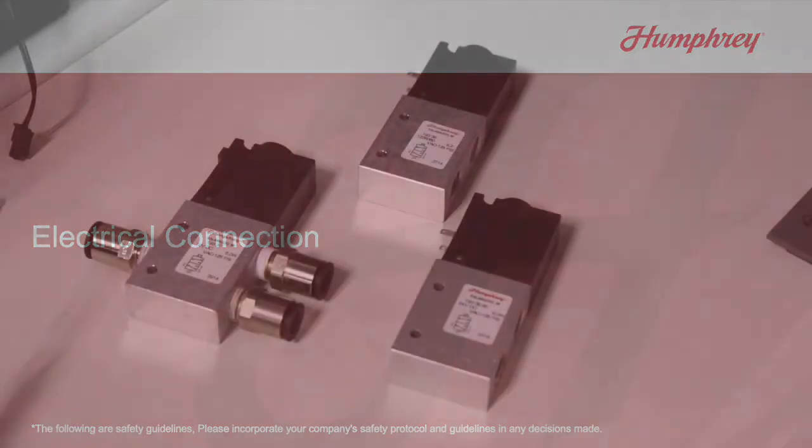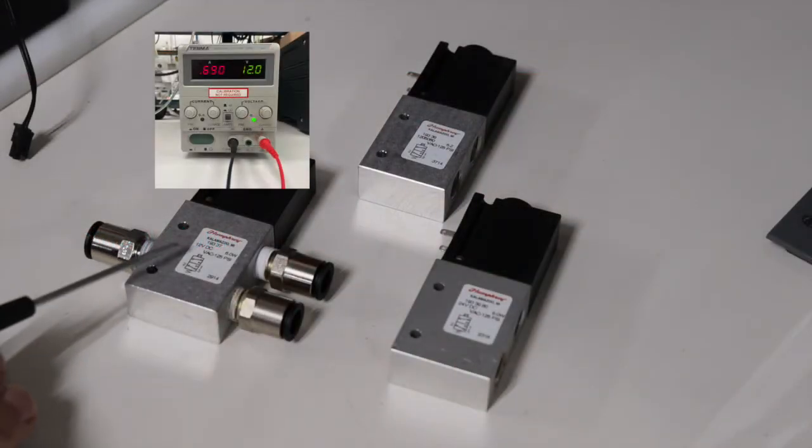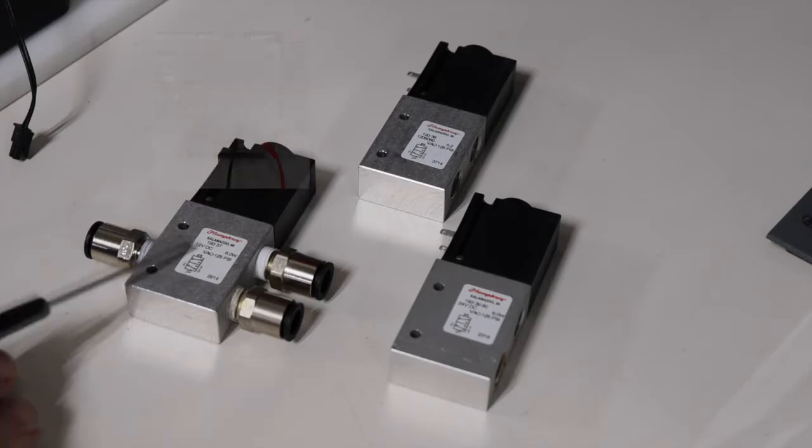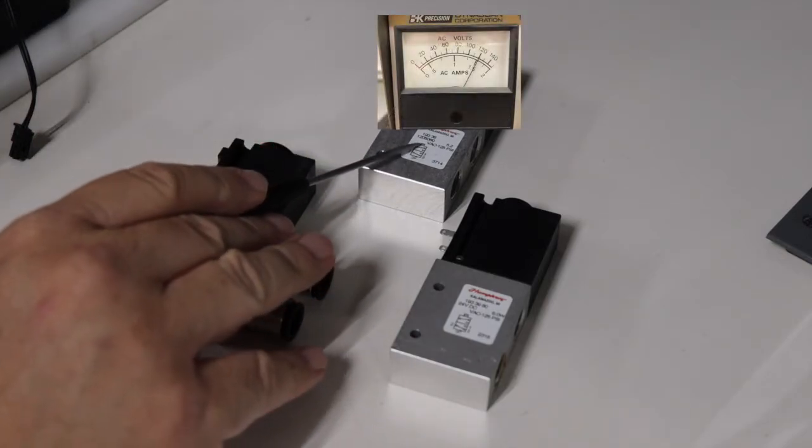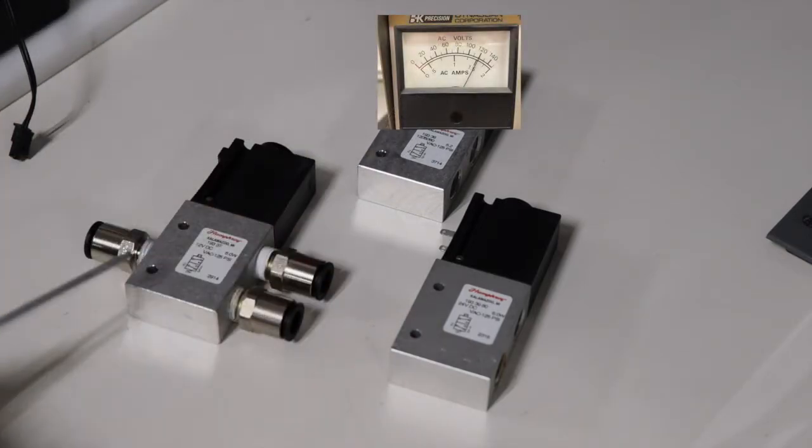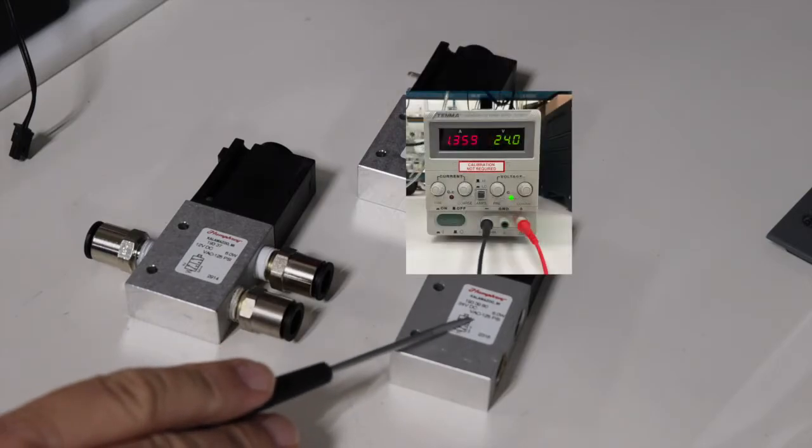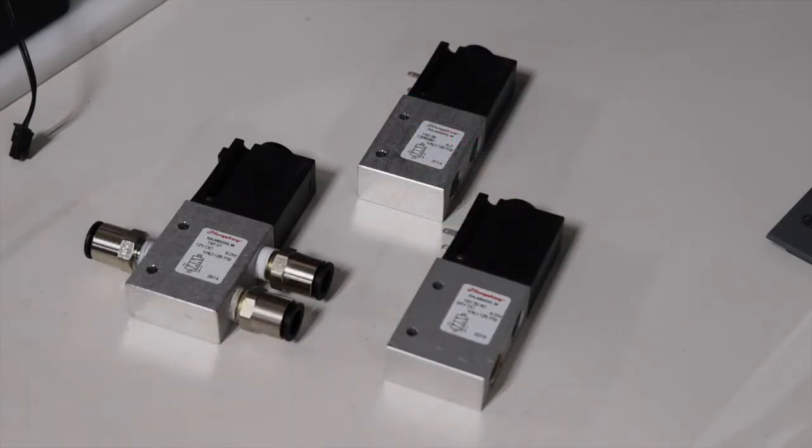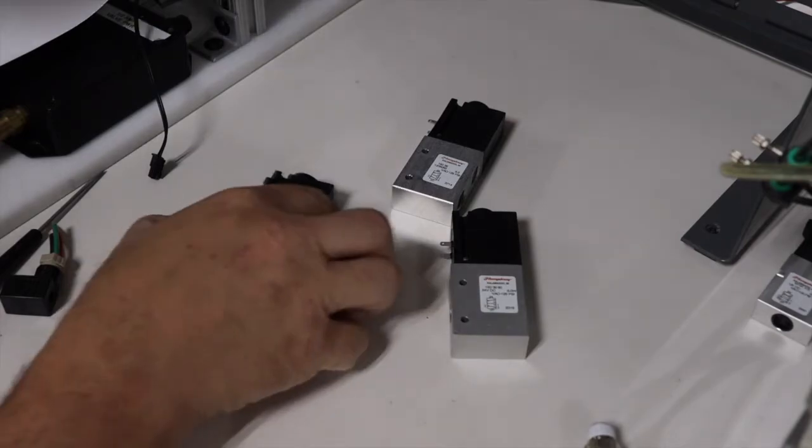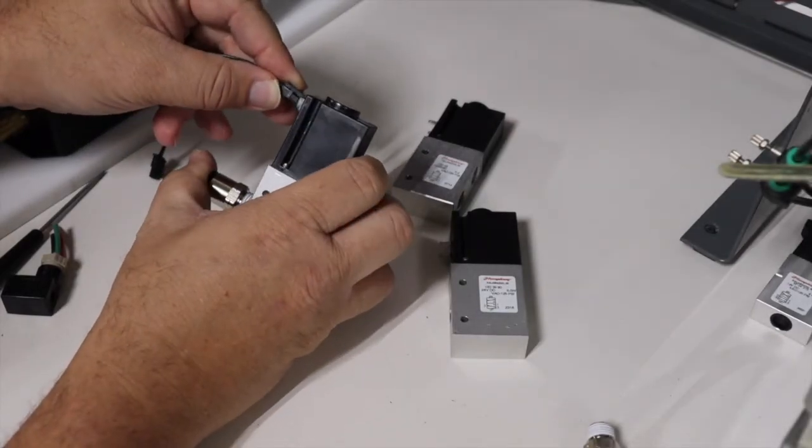Make sure the valve voltage is appropriate for the system and position it is being installed in. For example, use a 24 VDC valve where a 24 VDC valve is required. Do not use a 24 VDC valve where a 120 VAC valve is required.